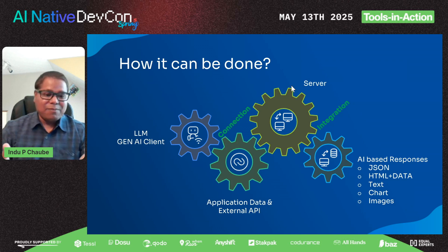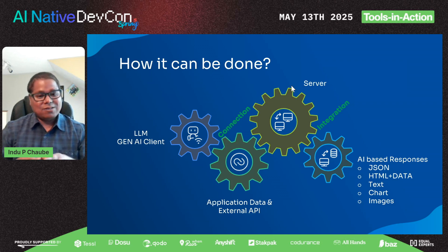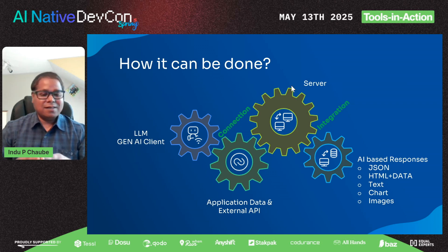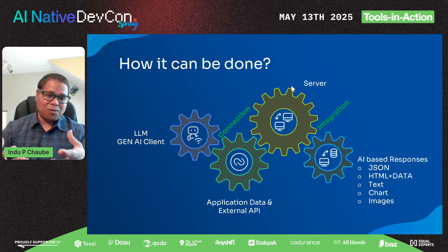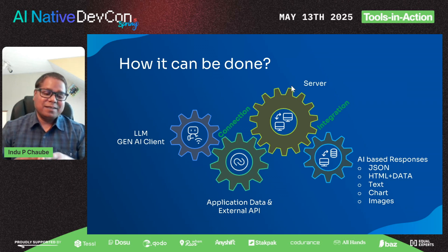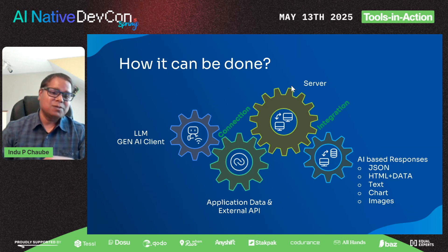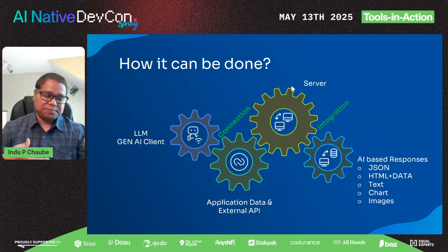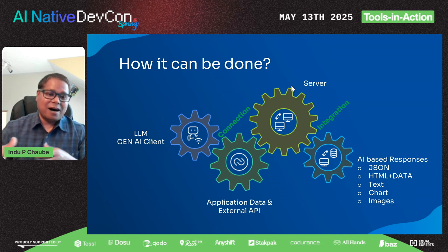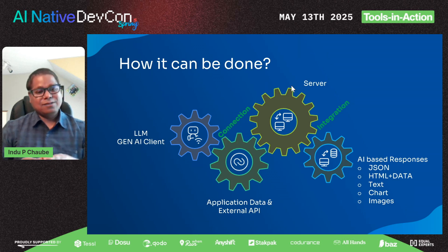What happens behind the scene is we request the client, the client connects with the data, gets the data, and connects with the LLM models as well — communicating 'this is the data, format it according to the user's need.' It compiles behind the scene and returns the whole formatted data into the interface. Then it's the user's responsibility to save that data or arrange it according to their need, enabling an interface so users can explore that data again and again. Whatever low code used to do, that whole responsibility can be taken over by Gen AI.